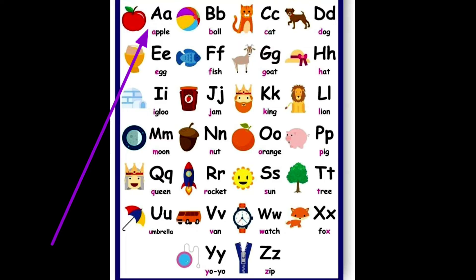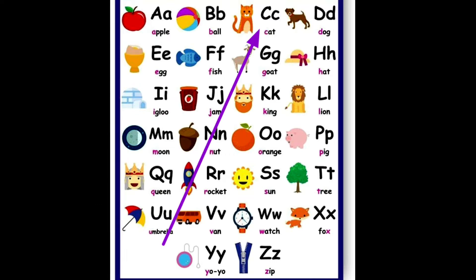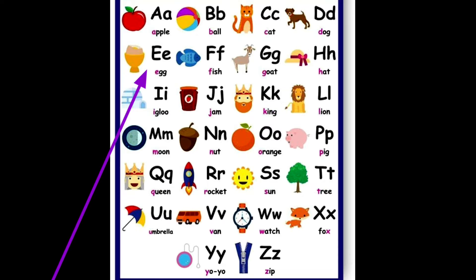A for apple, B for ball, C for cat, D for dog, E for egg.